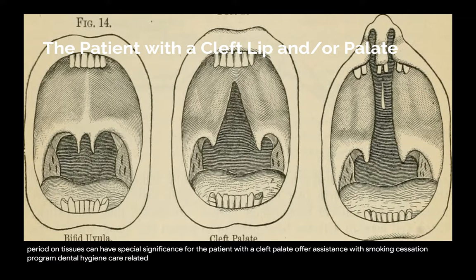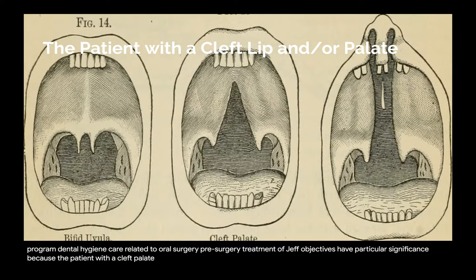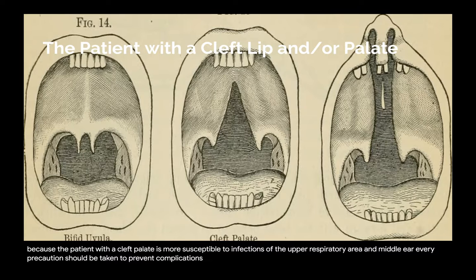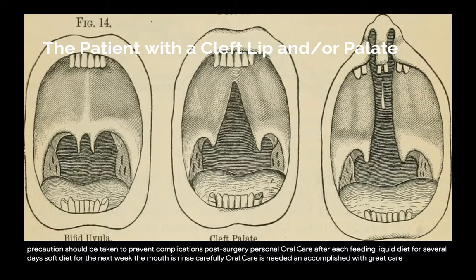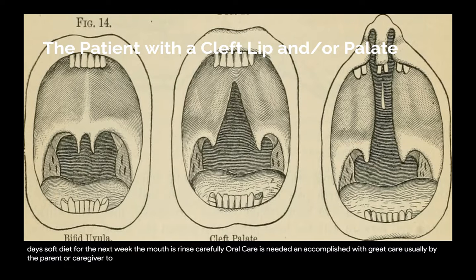Dental hygiene care related to oral surgery — pre-surgery: treatment objectives have particular significance because the patient with a cleft palate is more susceptible to infections of the upper respiratory area and middle ear. Every precaution should be taken to prevent complications. Post-surgery personal oral care: after each feeding, a liquid diet is followed for several days, then a soft diet for the next week. The mouth is rinsed carefully, and oral care is accomplished with great care — usually by the parent or caregiver — to avoid damage to the healing suture lines. In selected cases, a toothbrush with suction attachment may be useful.